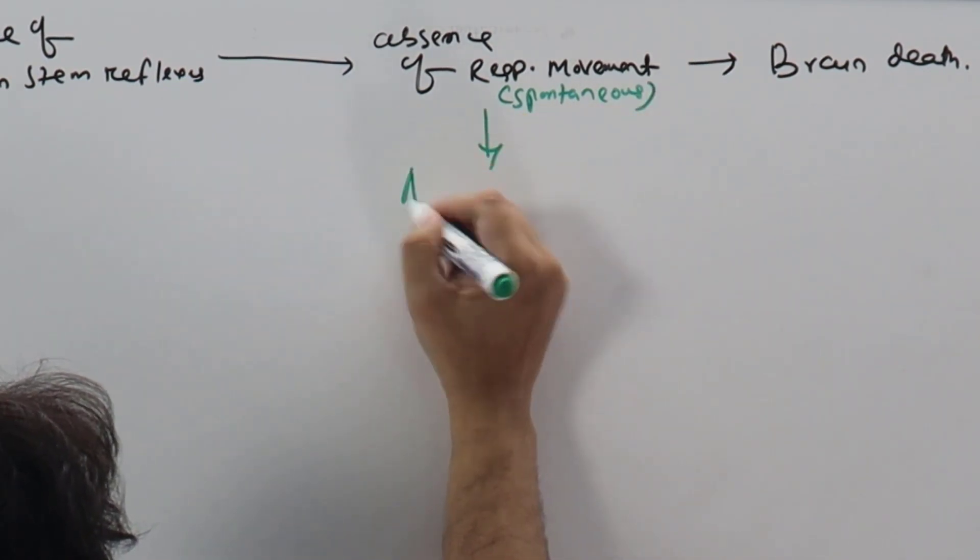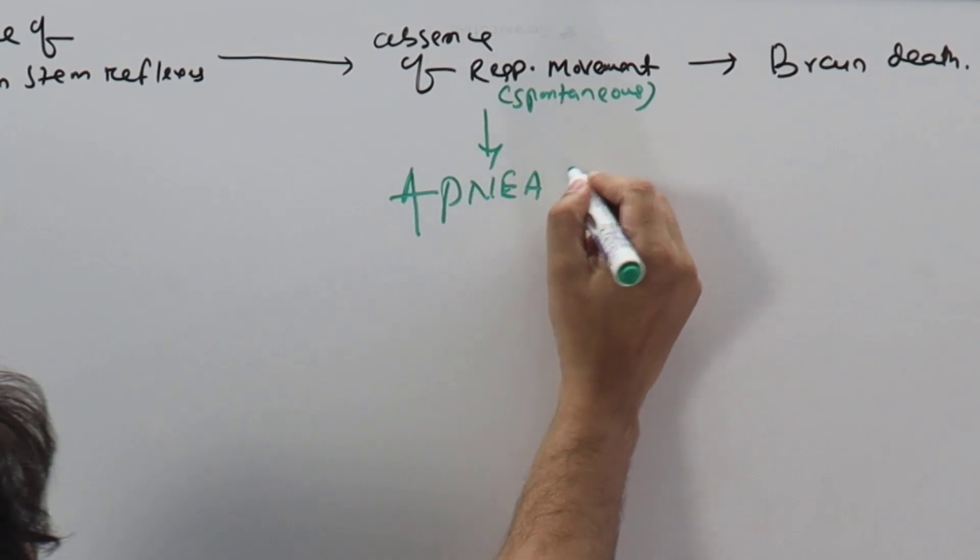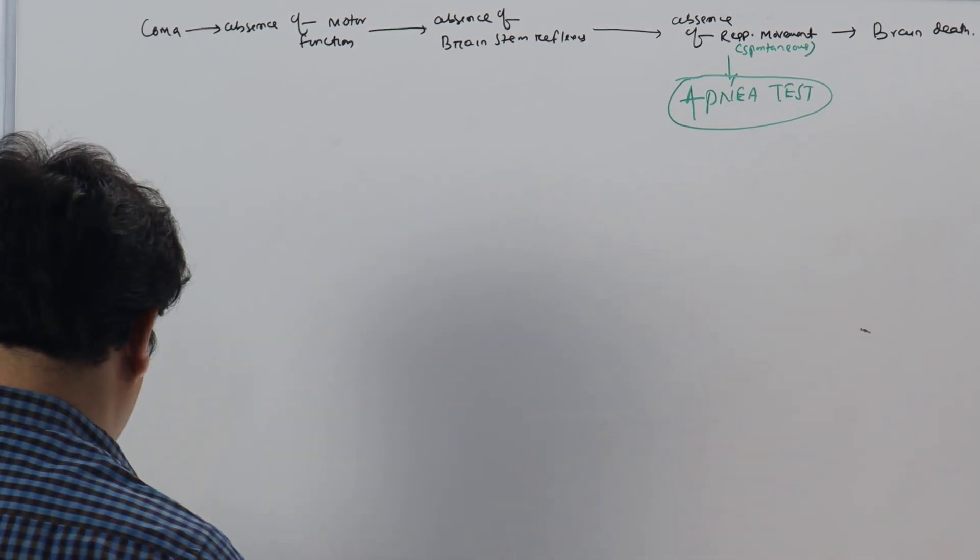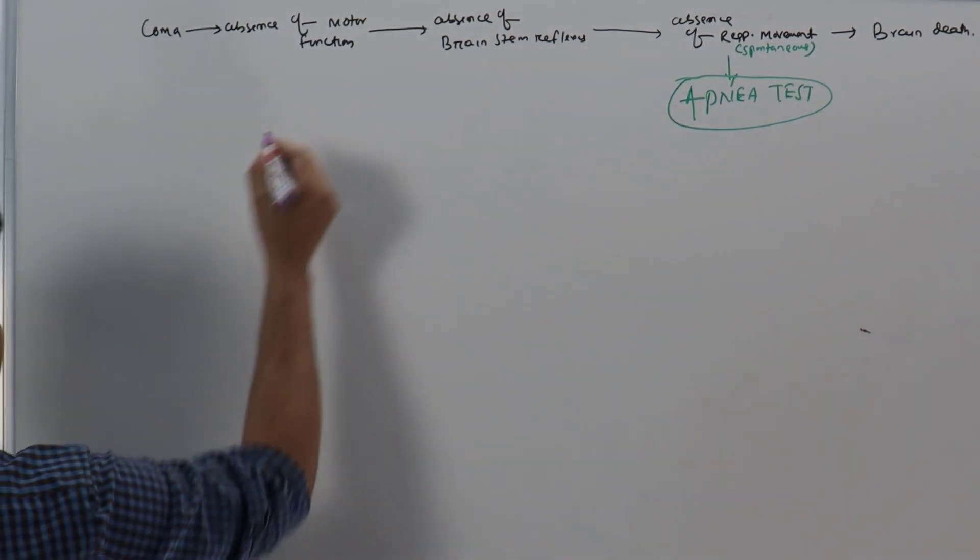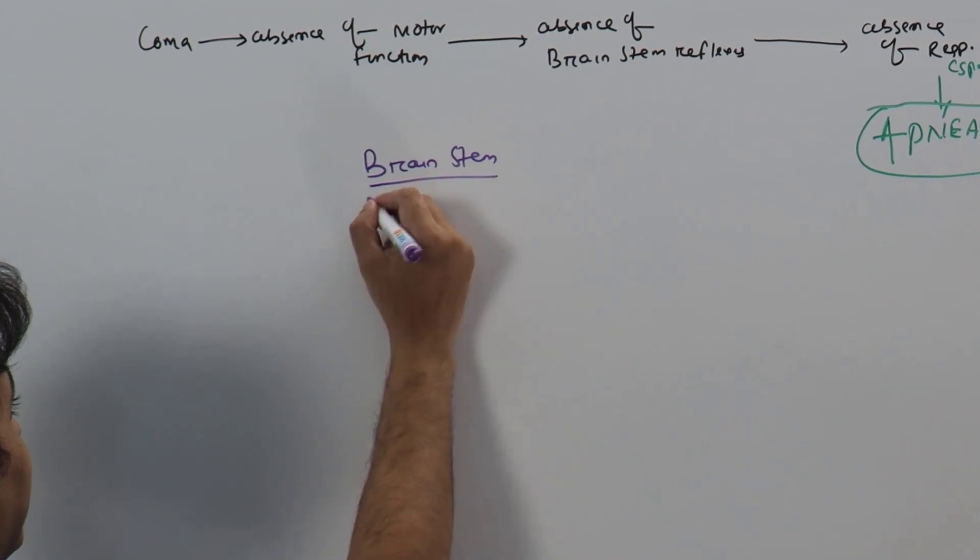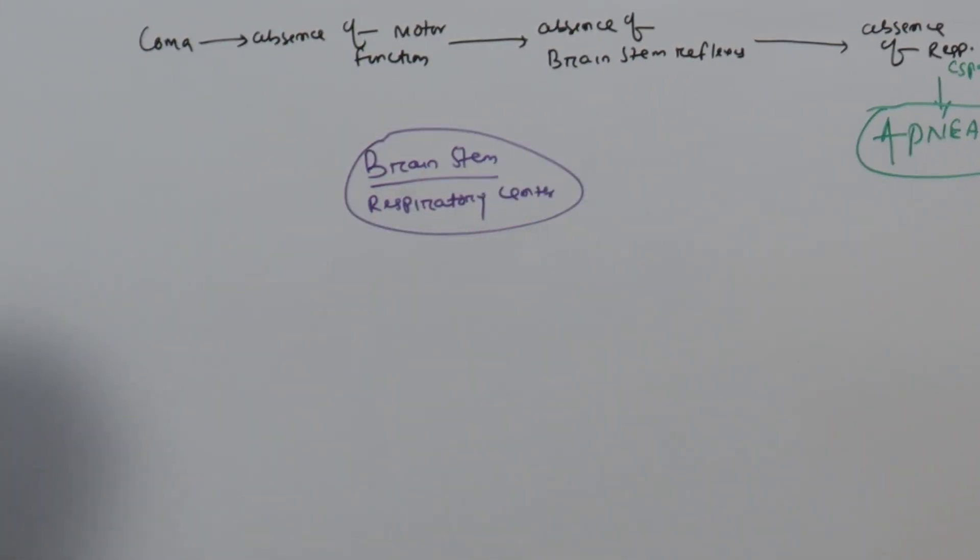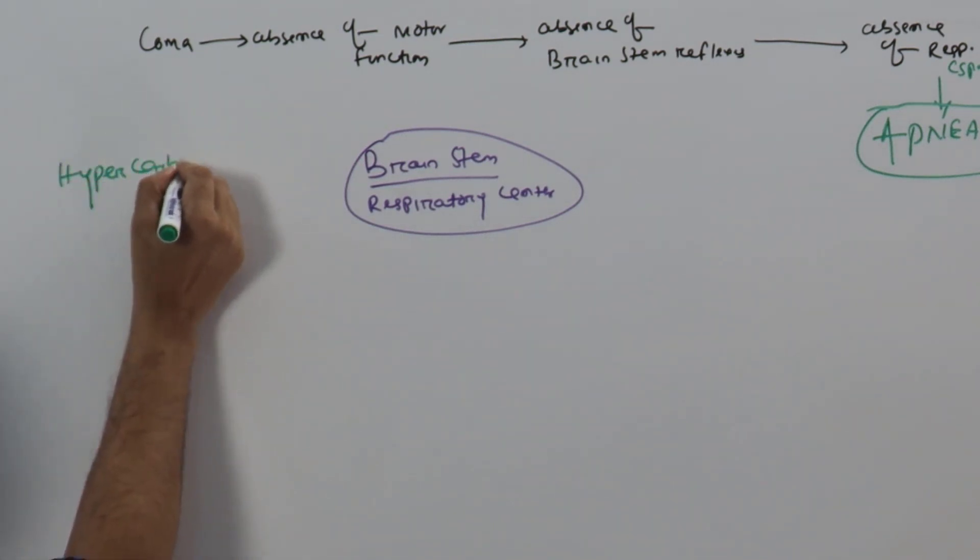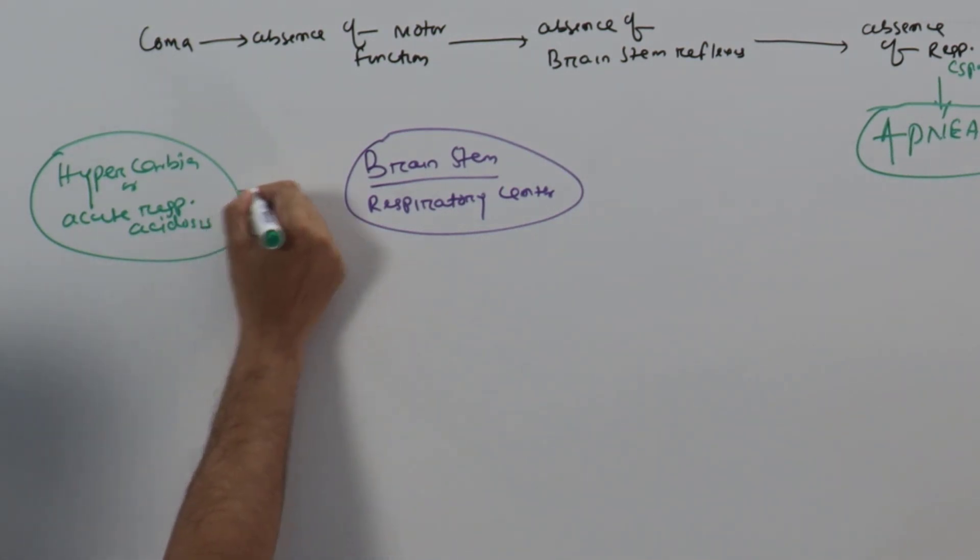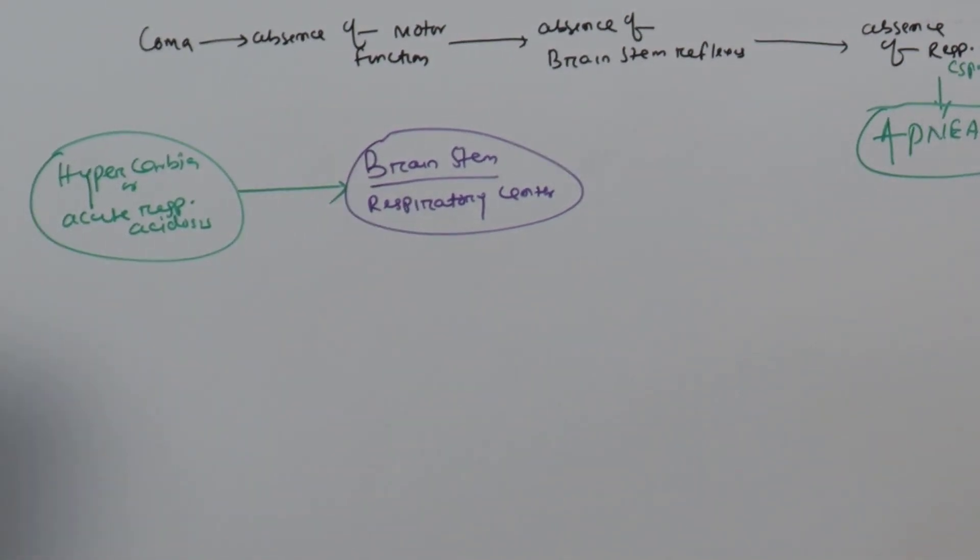We will discuss this today. What is the basis of this apnea test? The basis is there is a brain stem with a respiratory center. If we produce hypercarbia or hypercapnia or acute respiratory acidosis, then it will go and stimulate the respiratory center.